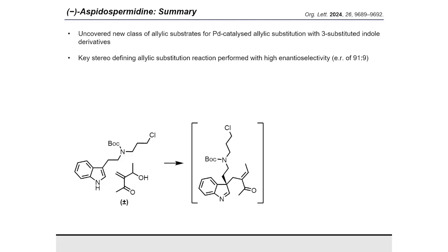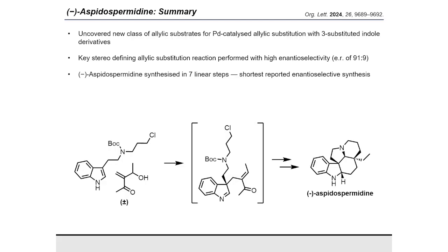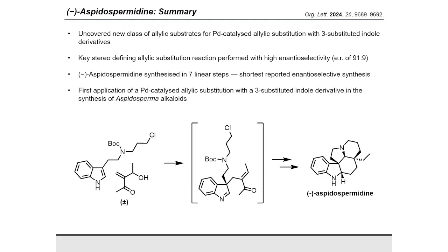The allylic substitution reaction was developed with high enantioselectivity and acted as a stereodefining step in our synthetic route. The remaining stereocenters were then installed with full diastereoselectivity under substrate control. This culminated in the shortest enantioselective synthesis of aspidospermine reported to date, in seven linear steps from commercially available starting materials. Furthermore, this work represents the first application of a palladium-catalyzed allylic substitution reaction with a free substituted indole derivative in the synthesis of aspidospermine and more broadly of Aspidosperma alkaloids.